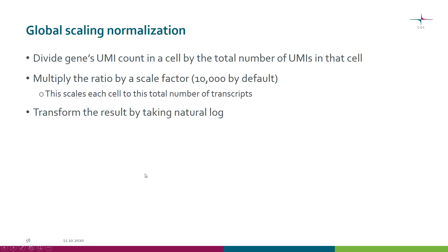The Seurat package offers, as the default method, global scaling normalization. First, we take the gene expression value or UMI count in a cell and divide it by the total number of transcripts or UMIs in that cell to get a ratio. Then we multiply the ratio by a scale factor, which is 10,000 by default — in other words, we scale each cell to this total number of transcripts. Finally, we transform the result by taking the natural logarithm.